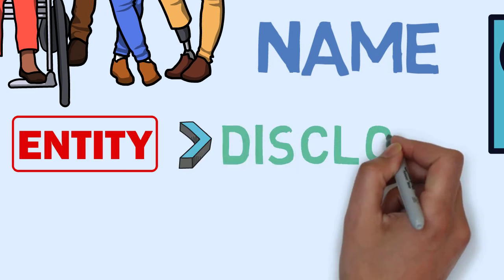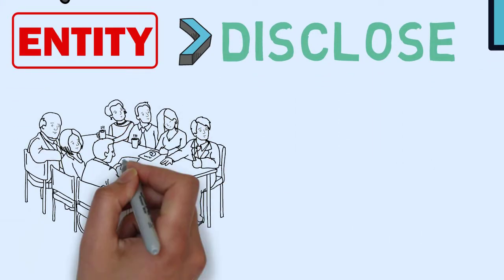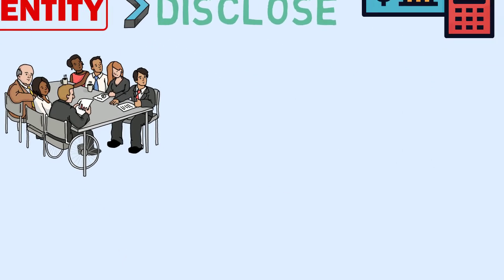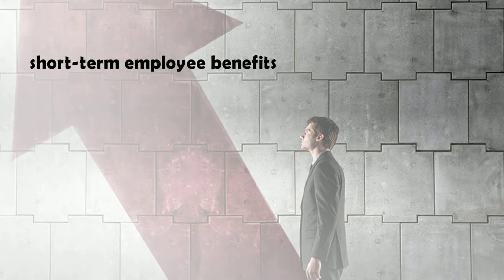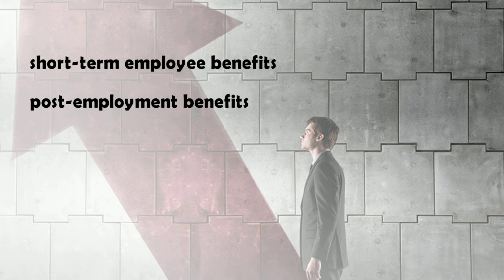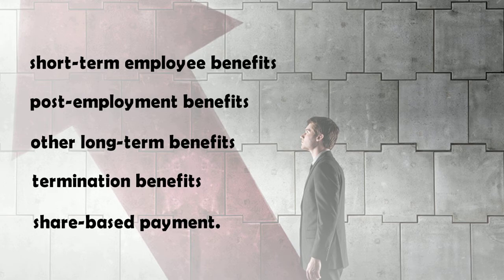An entity shall disclose the key management personnel compensation in total and for each of the following categories: short-term employee benefits, post-employment benefits, other long-term benefits, termination benefits, and share-based payments.